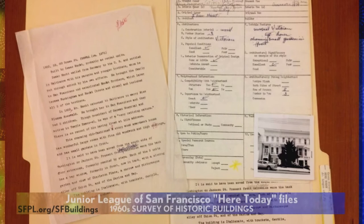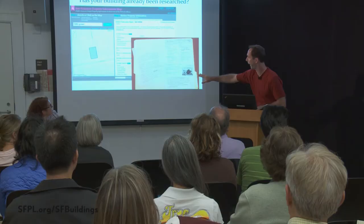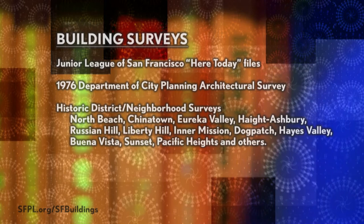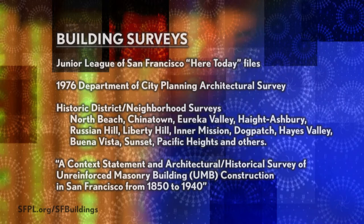In 1976 the city did a survey of buildings throughout the city — not every building, but a decent number — and there will be a link through to a scan of that survey, which can be very helpful. Similarly, the Junior League did a survey of structures they thought were notable, and their files are on deposit at the library. There are also many other neighborhood surveys, like the North Beach survey, and most of the time we have a printed copy at the library.